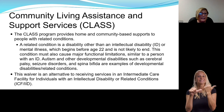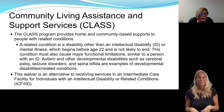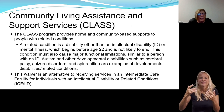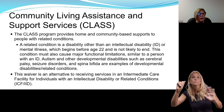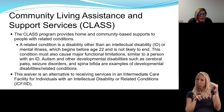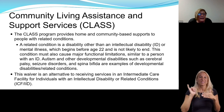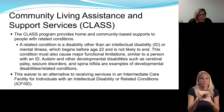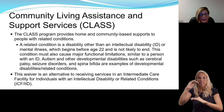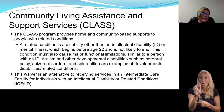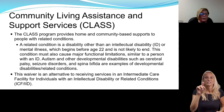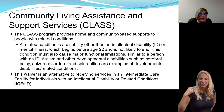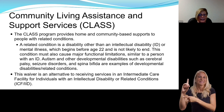Next is the Community Living Assistance and Support Services, or CLASS waiver. The CLASS waiver provides home and community-based supports to people with related conditions. A related condition is a disability other than an intellectual disability or a mental illness which begins before the age of 22 and is not likely to end, and it must cause major functional limitations similar to a person with an intellectual disability. Examples of related conditions are autism, cerebral palsy, seizure disorders, and spina bifida. This waiver is an alternative to receiving services in an ICF/IDD facility.